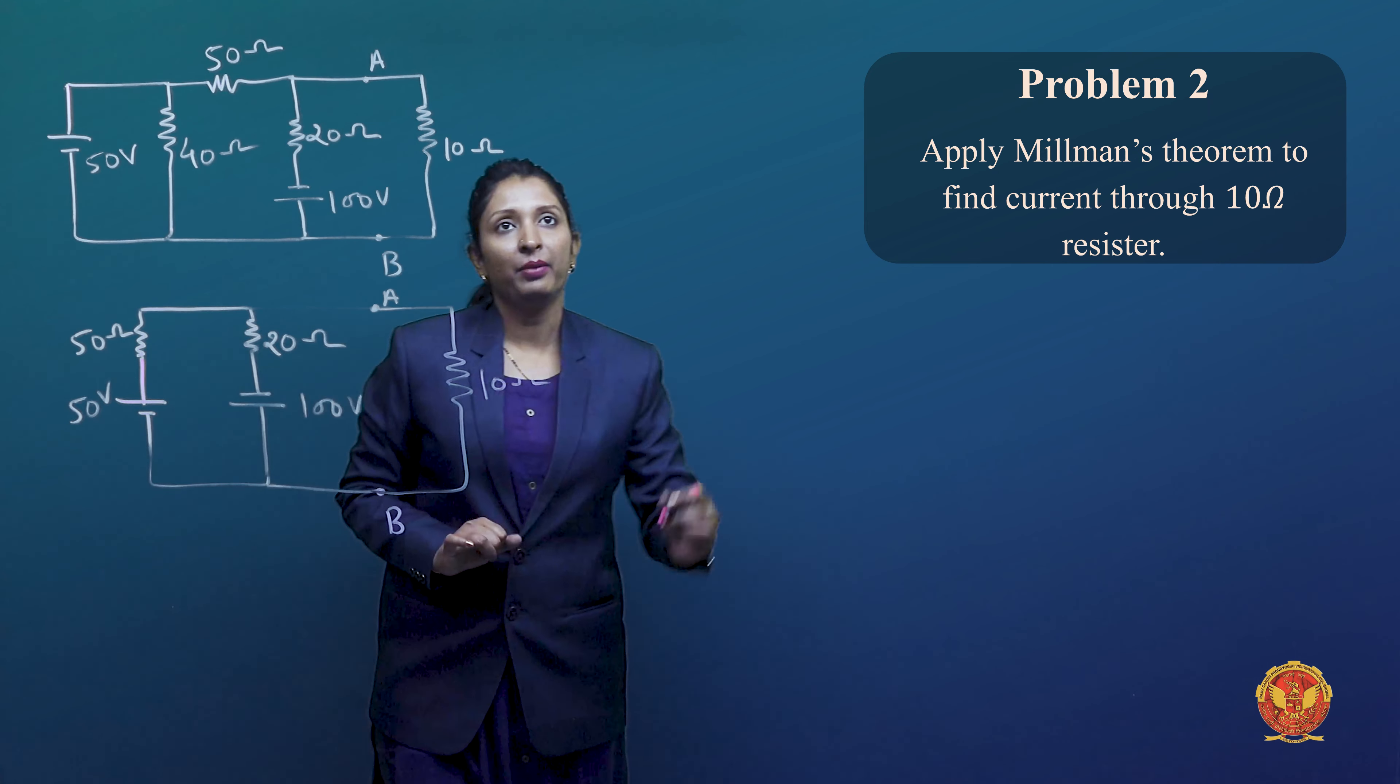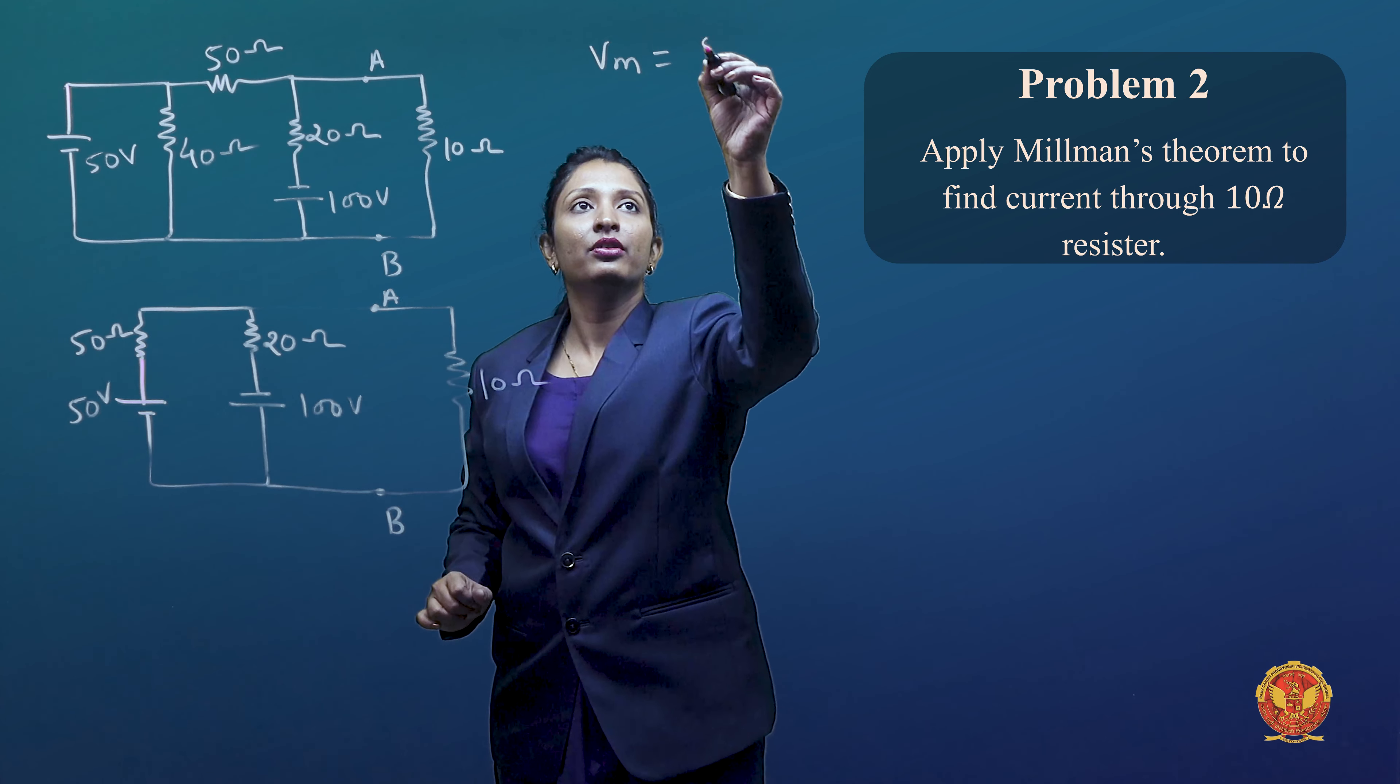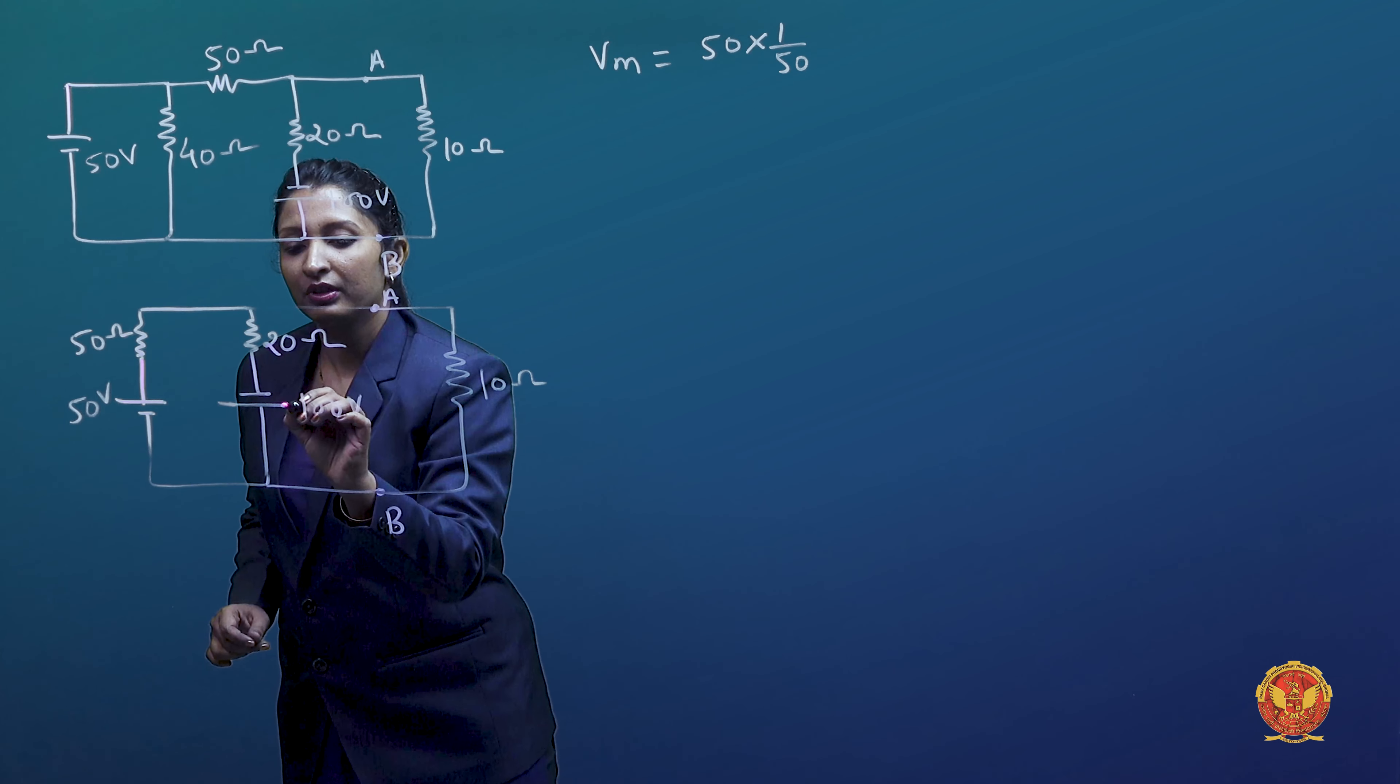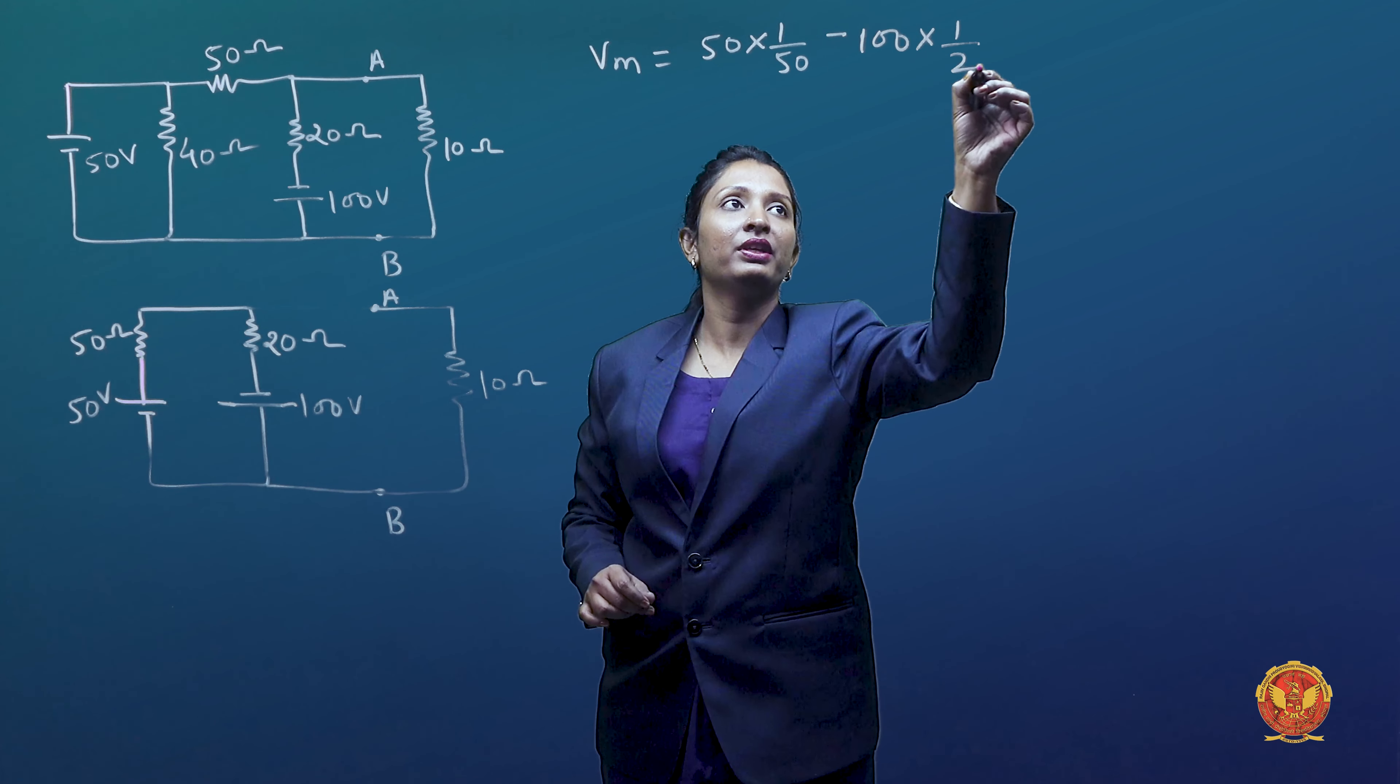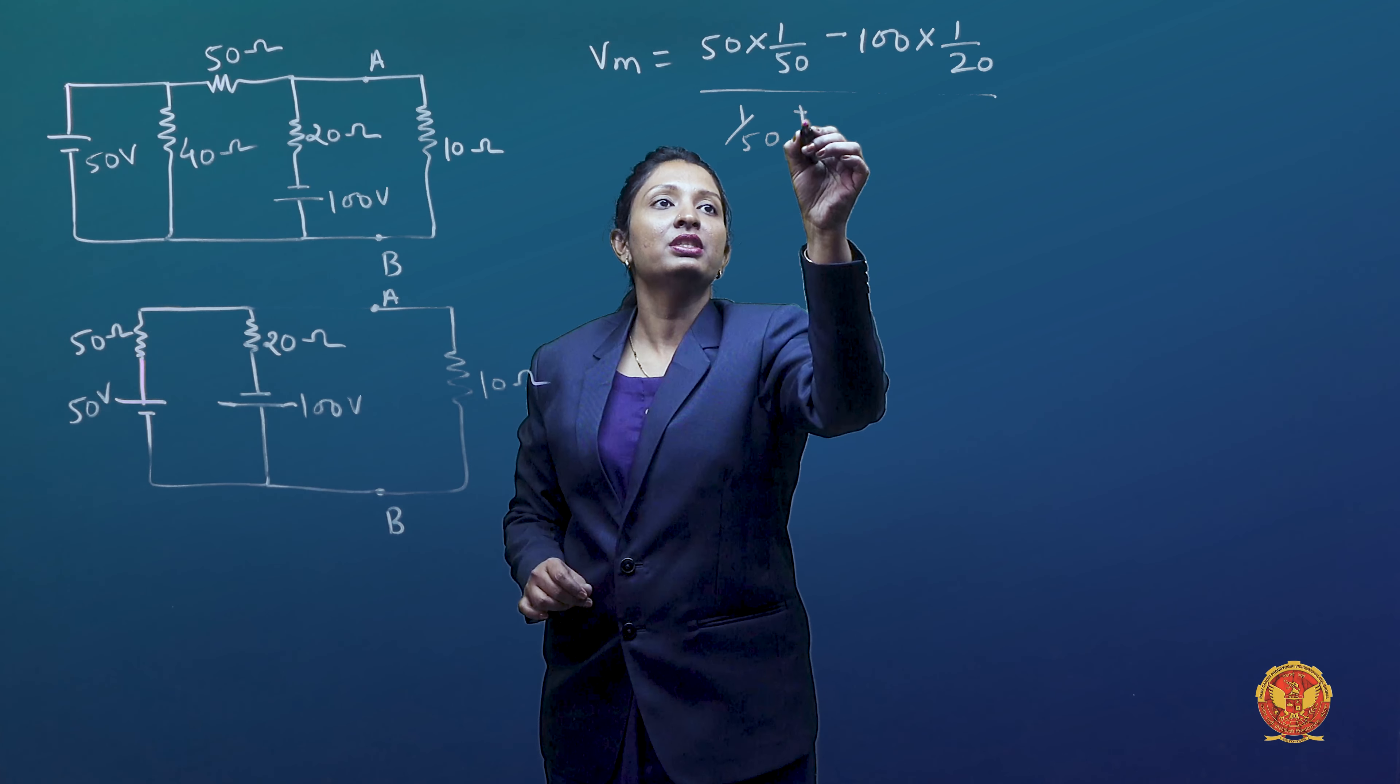Okay, we apply it here. Vm is equal to 50 multiplied by 1 by 50 minus 100 into 1 by 20, divided by 1 by 50 plus 1 by 20.